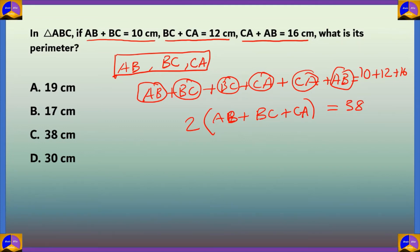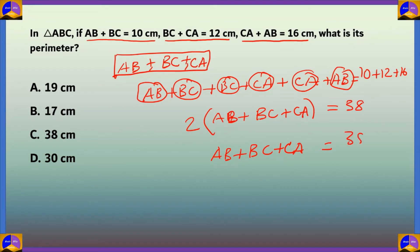The perimeter of a triangle is the sum of its sides, so perimeter equals AB plus BC plus CA. Dividing both sides by 2, we get AB + BC + CA equals 38 ÷ 2, which equals 19 cm. The correct answer is option A, 19 cm.